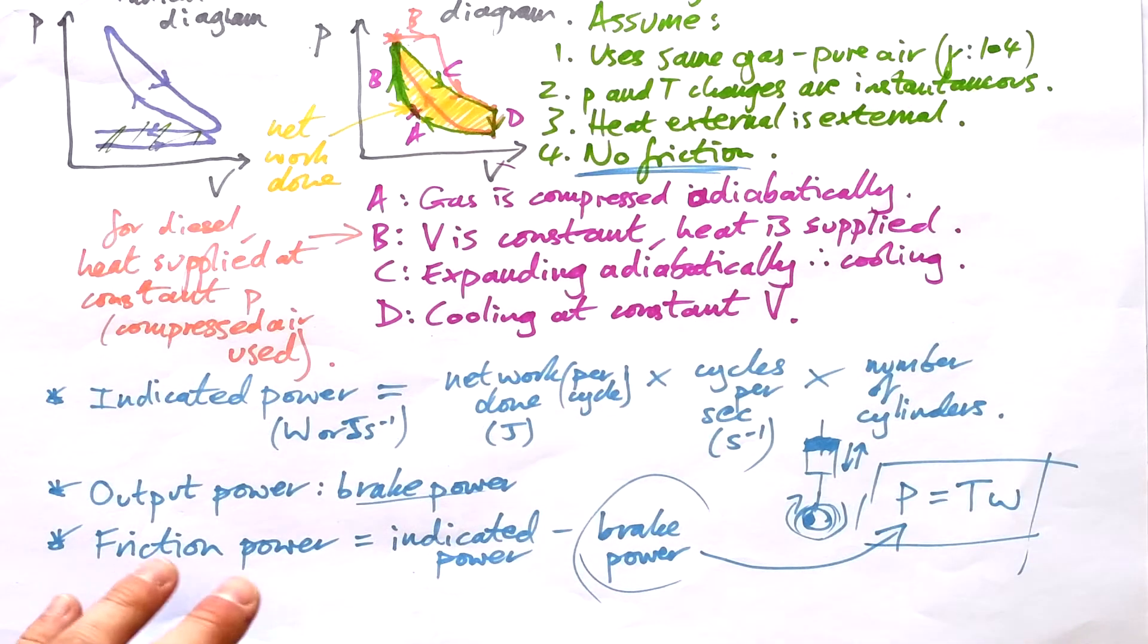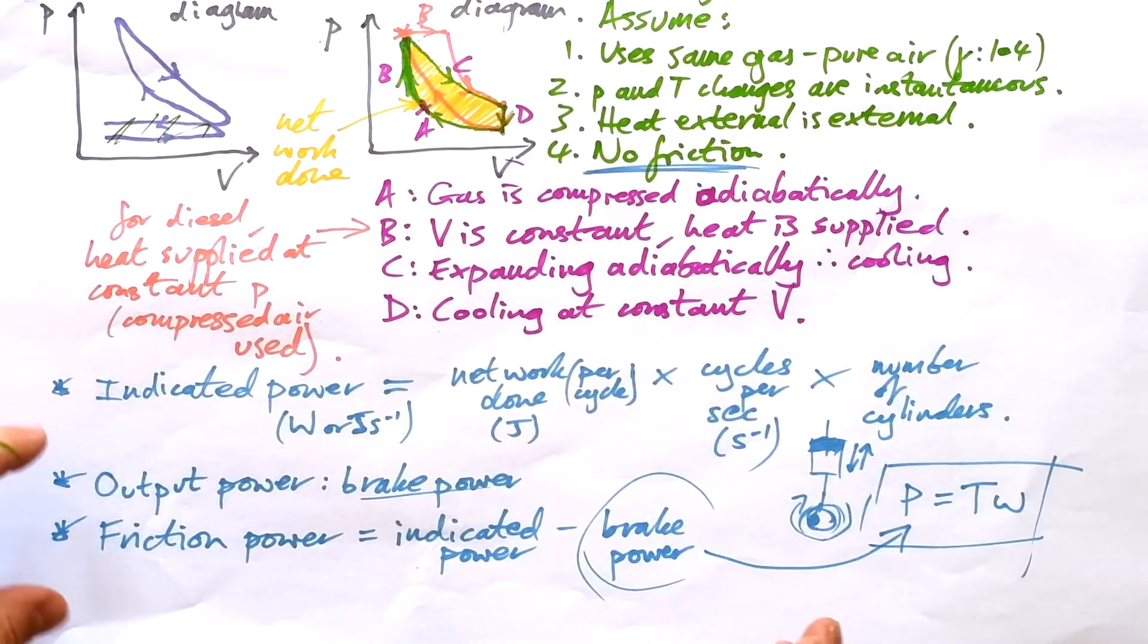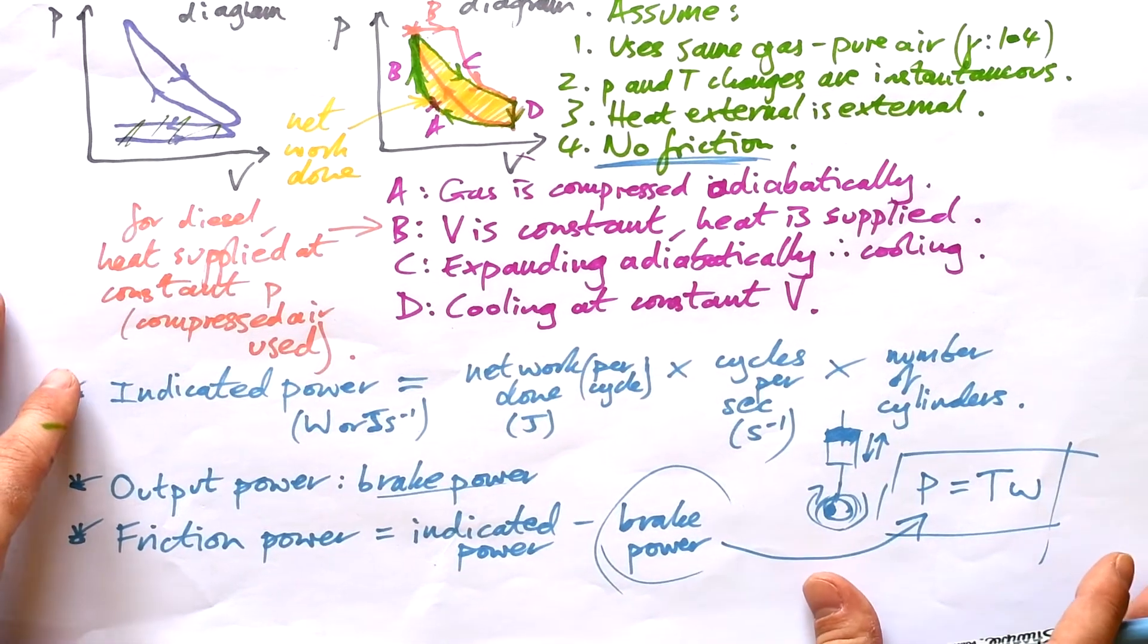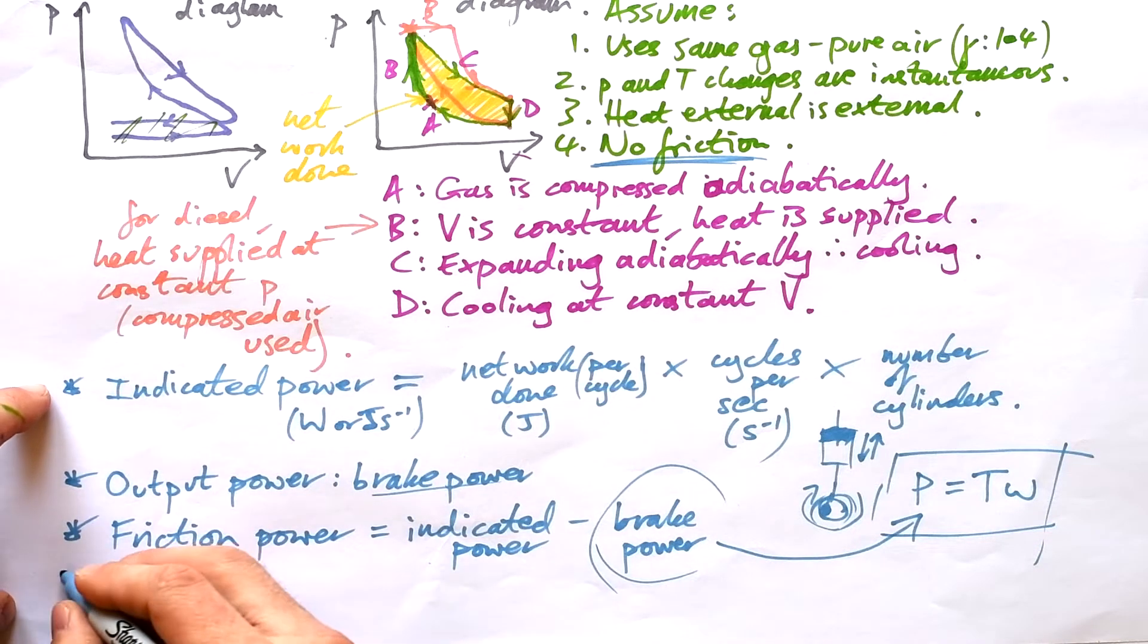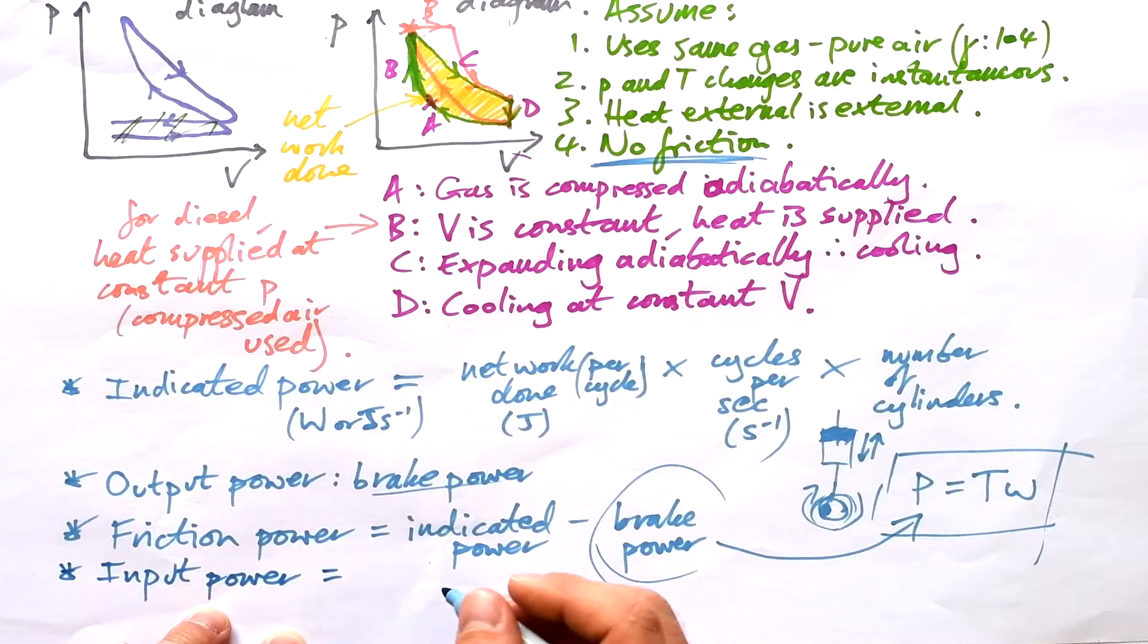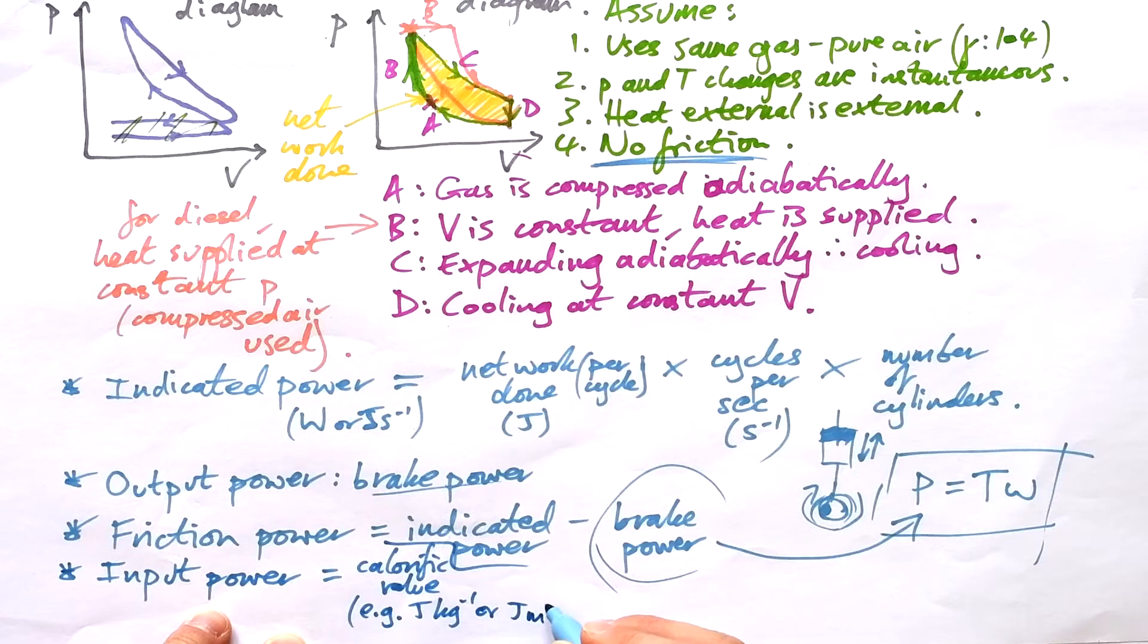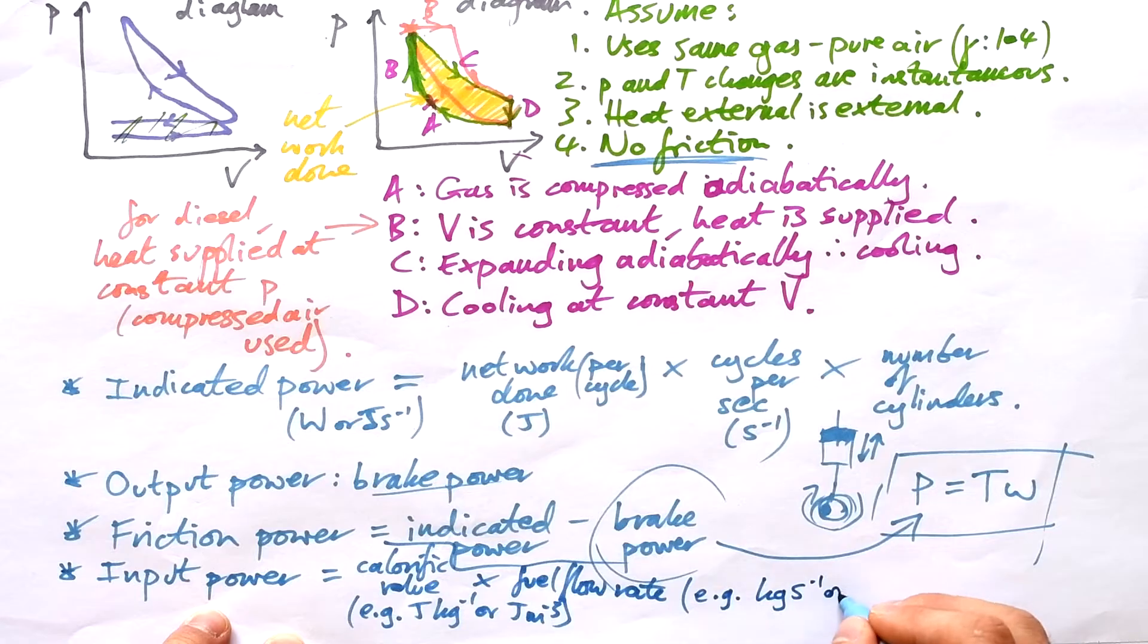However, we need to think about where does the power come from to begin with? Well, that comes from the fuel itself, the chemical potential energy that then is released. In other words, the heat supplied by the fuel per second. And so actually, input power is equal to, well, we can call it calorific value. In other words, that's just eg joules per kilogram, or that could be joules per, let's say, meter cubed, something like that. So how much energy do you have in a certain amount of the fuel times fuel flow rate? And that will be in either kilograms or meters cubed or something like that, eg, kilograms per second or meters cubed per second. And so if you multiply these two things together, you're ending up with joules per second.